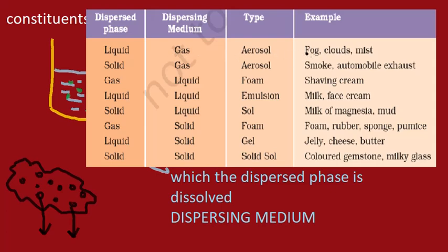If a solid is suspended in a gas, like smoke, this is also an aerosol-type colloid. In smoke, very small particles of dust or other kinds of solid are suspended in air. This is an example of a solid-in-gas type aerosol colloid.